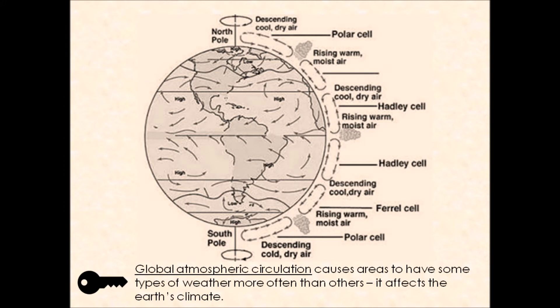So what is global atmospheric circulation? It's a concept that causes areas to have some types of weather more often than others. It basically affects the earth's climate and our climate zones. When we're thinking about global weather patterns, we're referring to the worldwide movement of heat energy and it causes different weather conditions around the world.